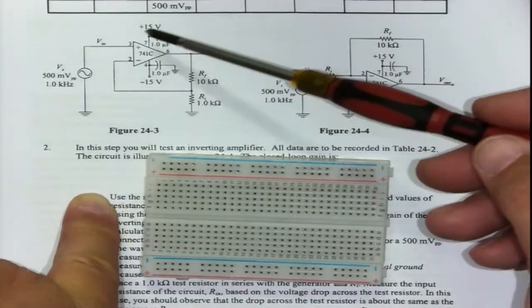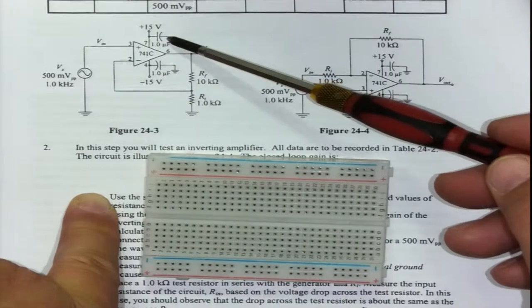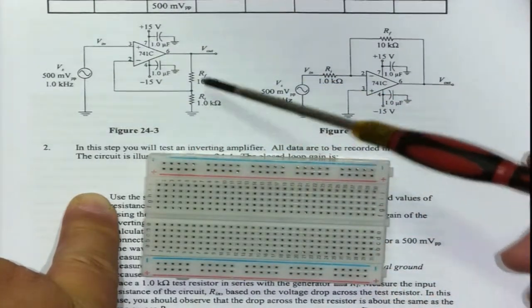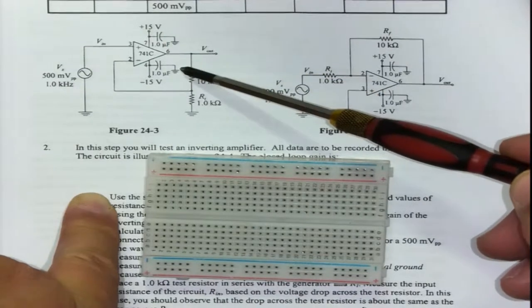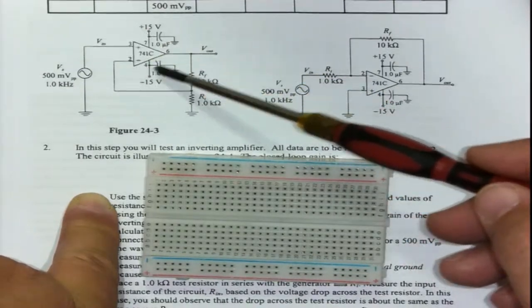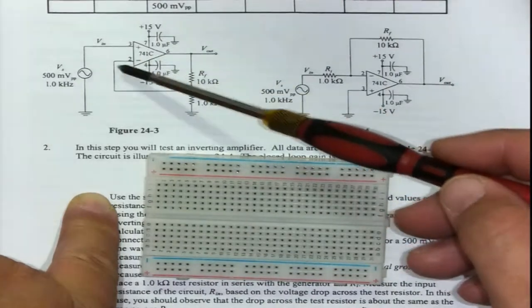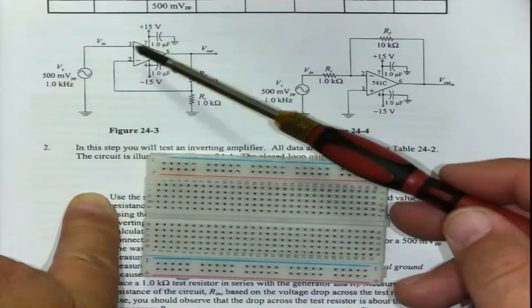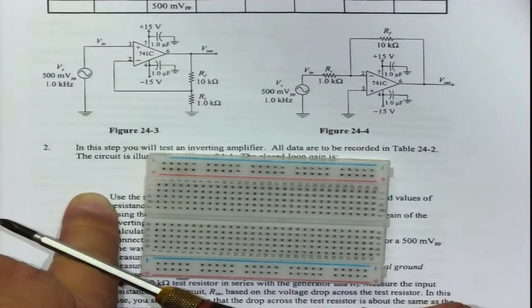What is special about this op-amp? It does not connect to ground. Look, the circuit connects to ground, the capacitor connects to ground, but the overall IC itself, none of the eight pins is actually connected to ground. And that is how it is.